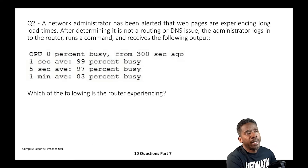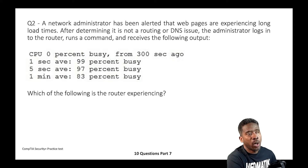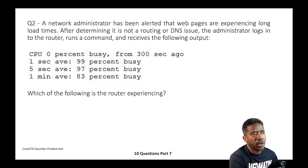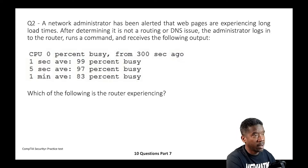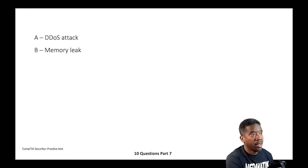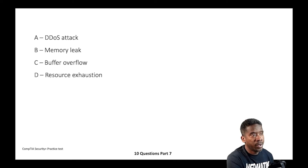Question two: A network administrator has been alerted that web pages are experiencing long load times. After determining it's not a routing or DNS issue, the administrator logs into the router, runs a command, and receives a CPU report output. Which of the following is the router experiencing? A) DDoS attack, B) Memory leak, C) Buffer overflow, or D) Resource exhaustion.